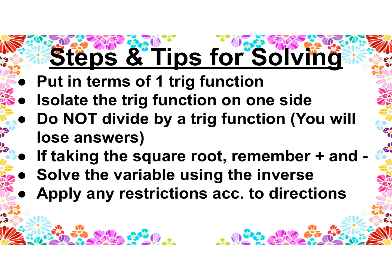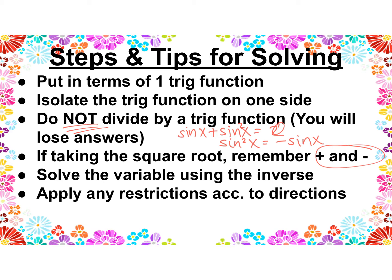Some steps and tips for solving: First, like when simplifying, try to get everything down to one trig function. Then isolate the trig function by itself on one side. Importantly, do not divide by a trig function because you will lose answers — for example, with sine x plus sine² x = 0, you don't want to divide both sides by sine. If you take the square root, remember the plus or minus. Then solve for the variable using the inverse trig function and apply any restrictions according to the directions.